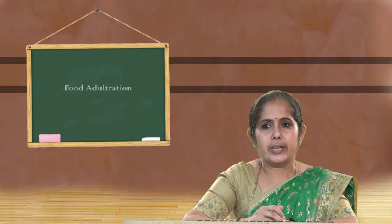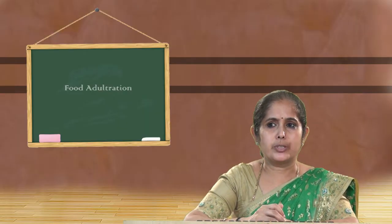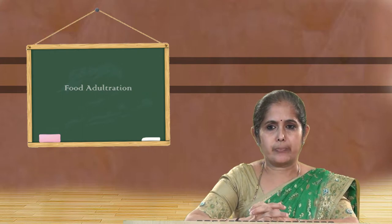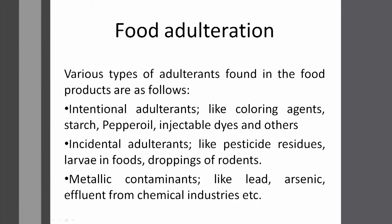Now let us see various types of adulterants found in food products. There are intentional adulterants like coloring agents, starch, pepper oil, and injectable dyes. Some are incidental adulterants like pesticide residues, larvae in food, and droppings of rodents. Next are metallic contaminants like lead, arsenic, and effluents from chemical industries.